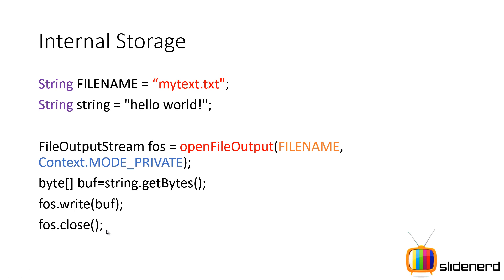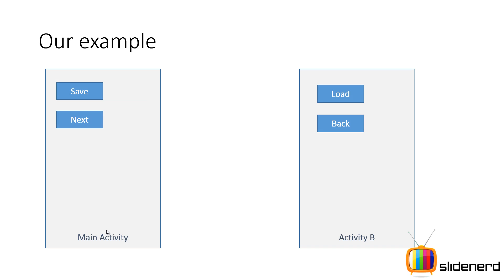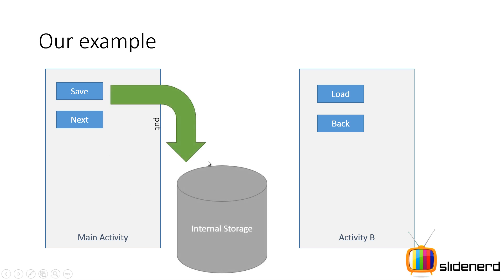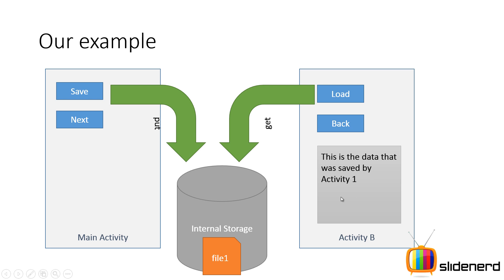It is very important that you close your input and output streams after use. If you have a Java background you know this well; otherwise, file I/O will be covered in more detail in the Java object-oriented playlist. The upcoming example will be straightforward: there's a save button and a load button. Data generated in MainActivity is saved to internal storage when save is clicked, then loaded into a second Activity B when load is clicked, with the data displayed there.